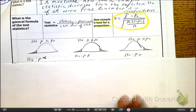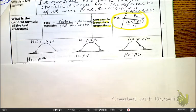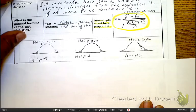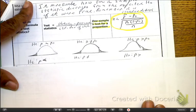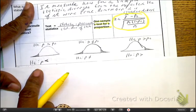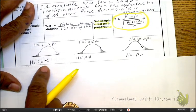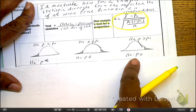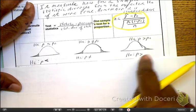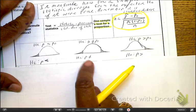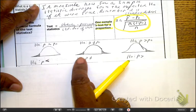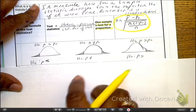I want to do a short video on how we do the calculation for a two-tail test. Let's remind ourselves: when we're looking at the tails, when the alternative hypothesis HA is less than, it's the left tail. When HA is greater than, it is the right tail. But when HA is not equal to, that is when we have a two-tail scenario.